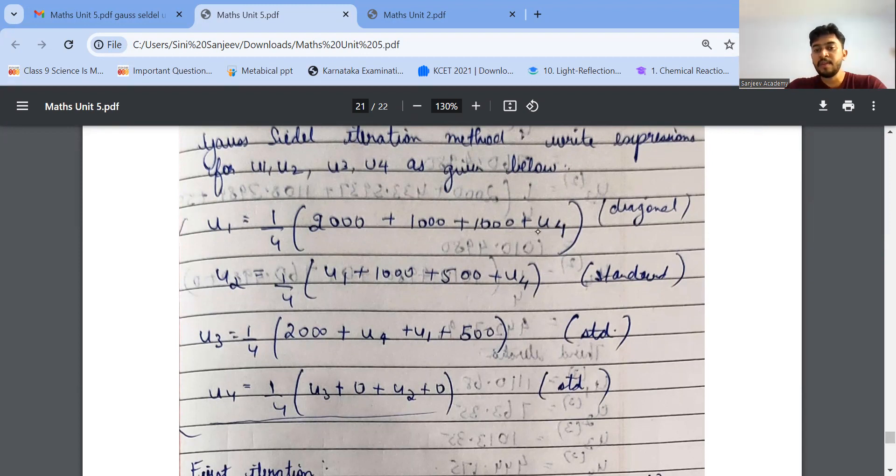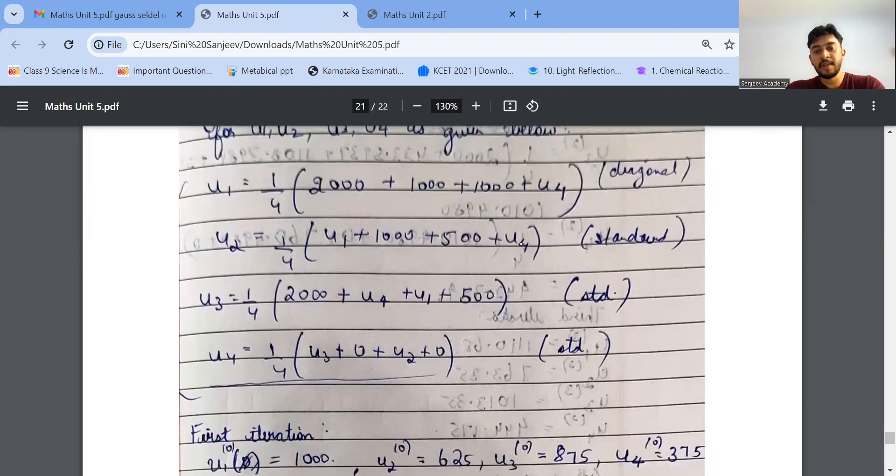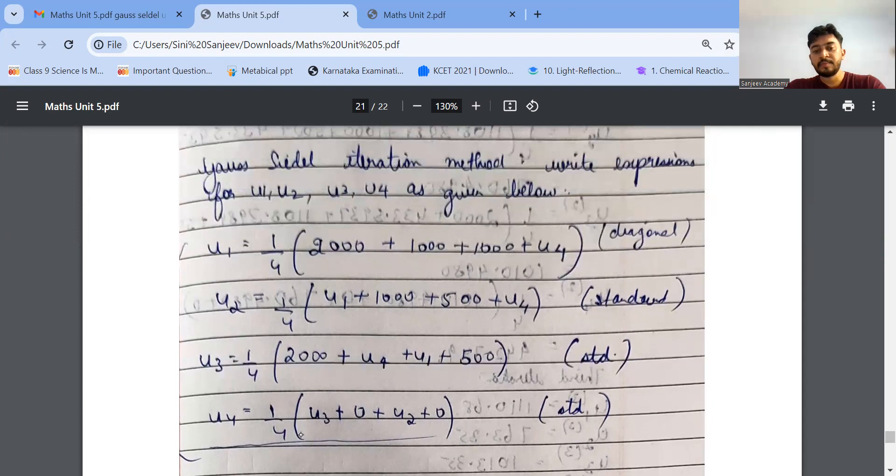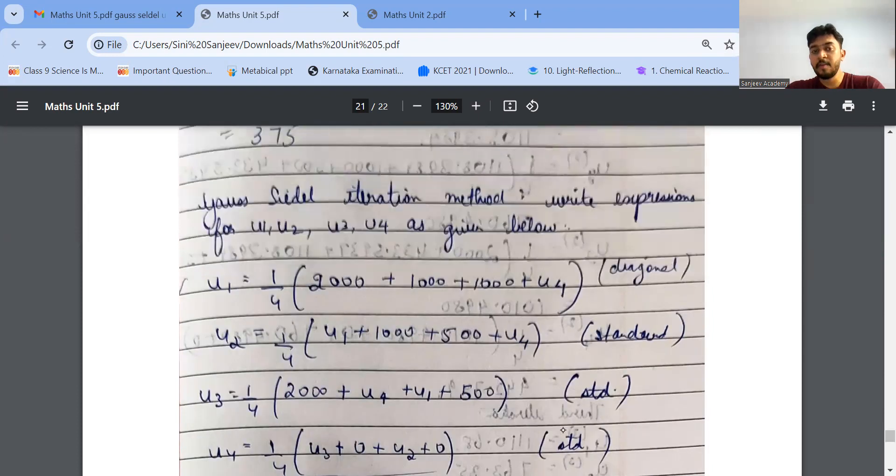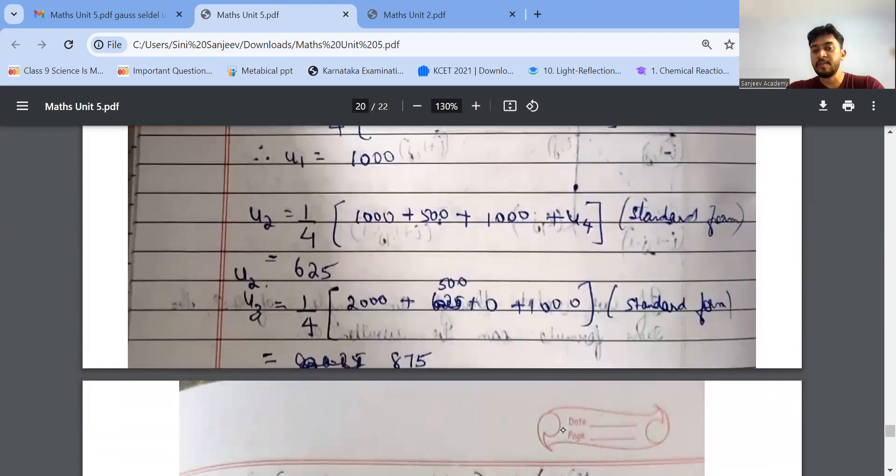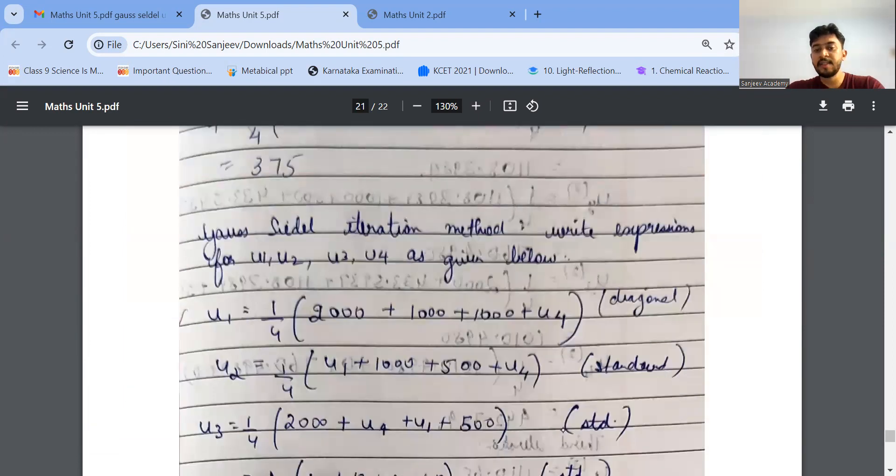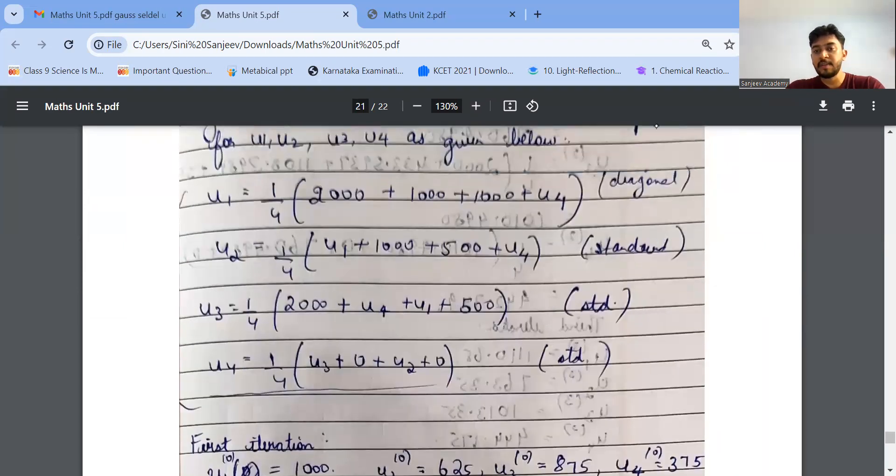But here the unknowns are U4, U1, U3, and U2. So in the calculator, you can take it as A, B, C, D, or X, Y, Z, and M for unknown variables. So once you're done with this, you frame the equation. For the first iteration, how much of our values we got here in U1, U2, U3, U4, put that as the first iteration value in this above equation. So U4 value is 375. So that I will substitute now in this. And I will be getting the first iteration value.